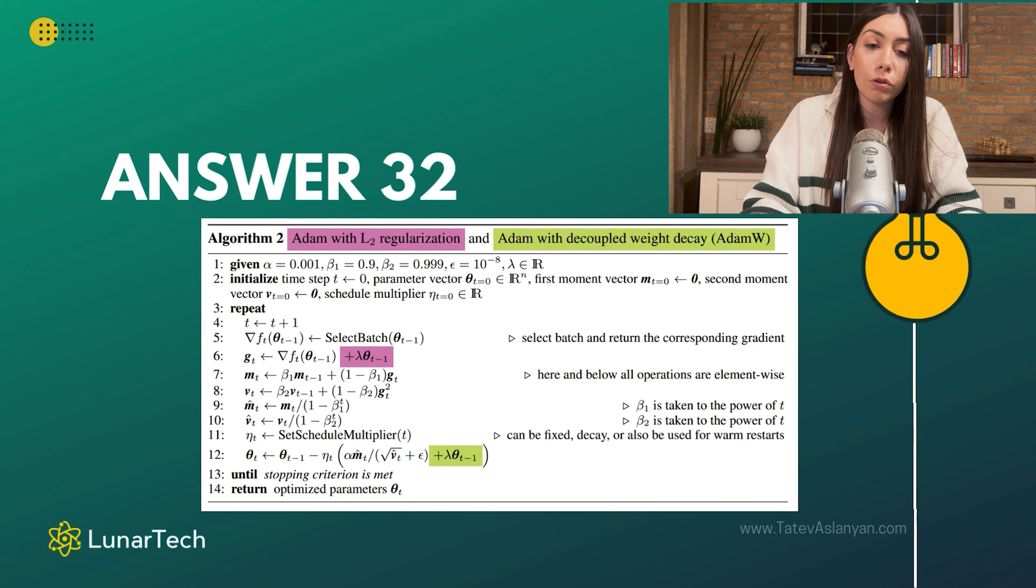Now when we do this, sometimes this doesn't help us that much to solve the overfitting problem. And the weight decay, so decoupling this weight decay from the gradient updates, and instead of using this as part of the gradient update, if we incorporate this directly as part of the model parameter updates,